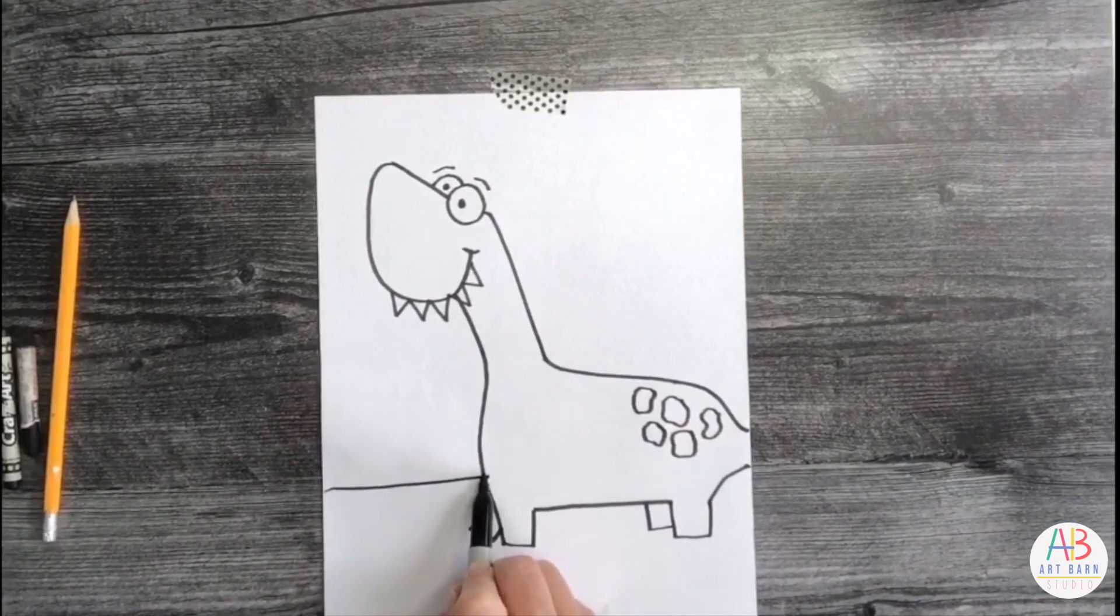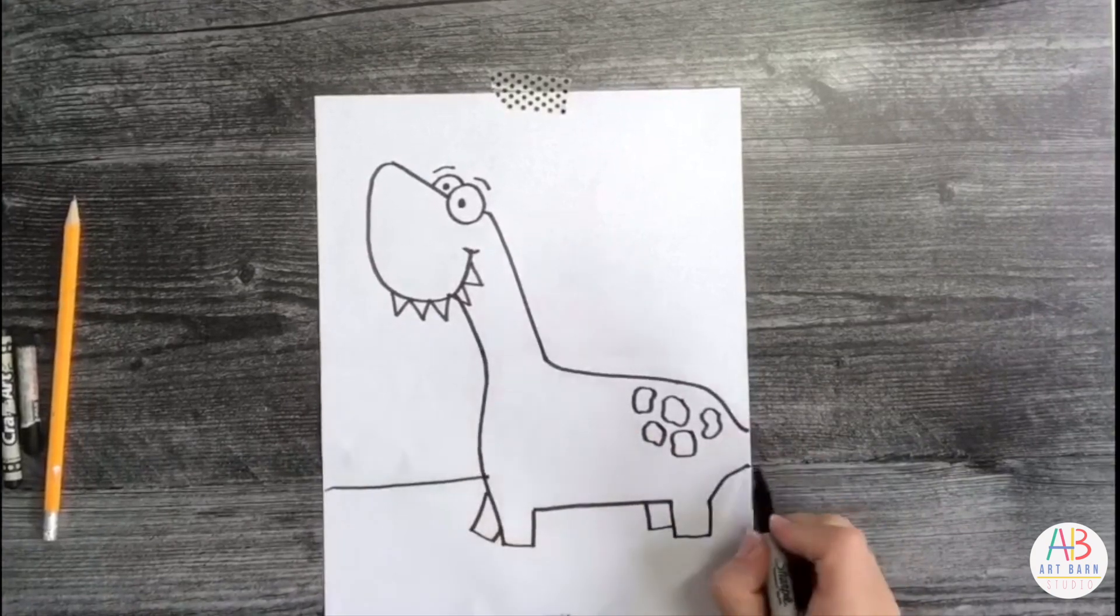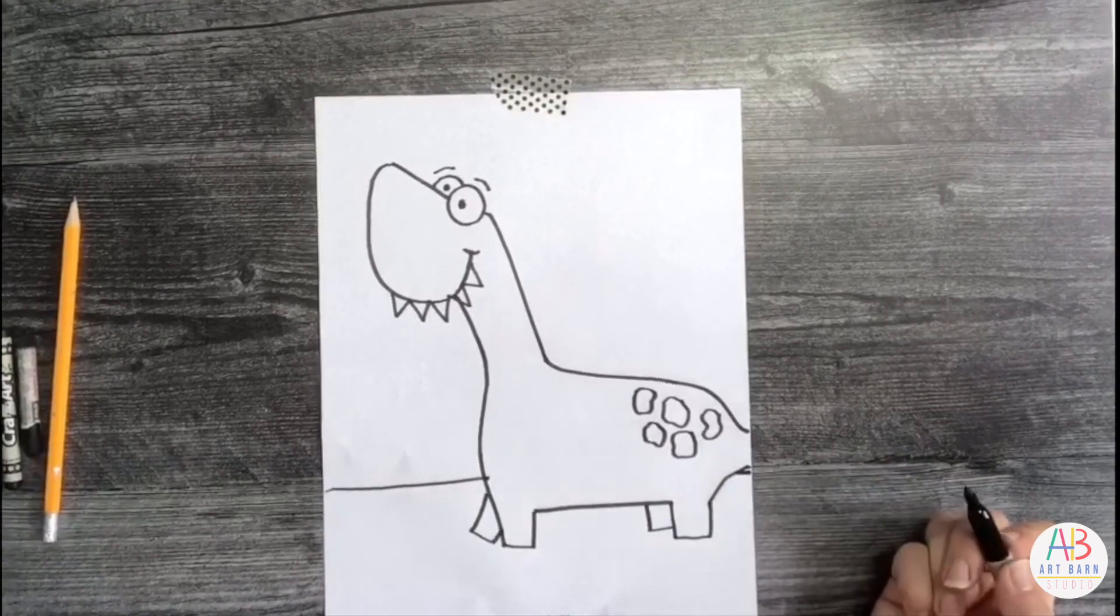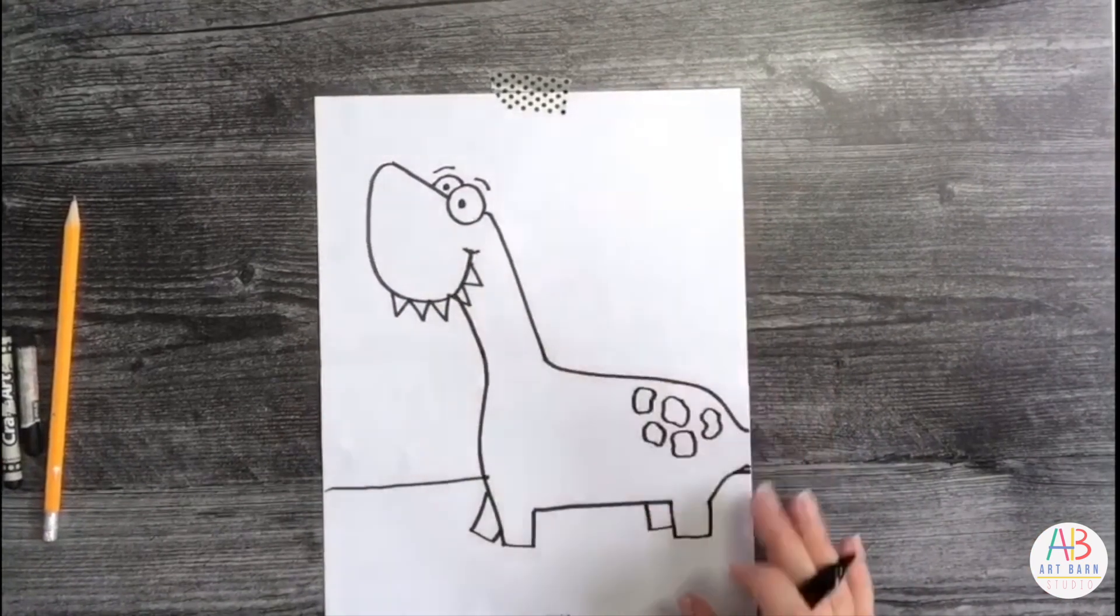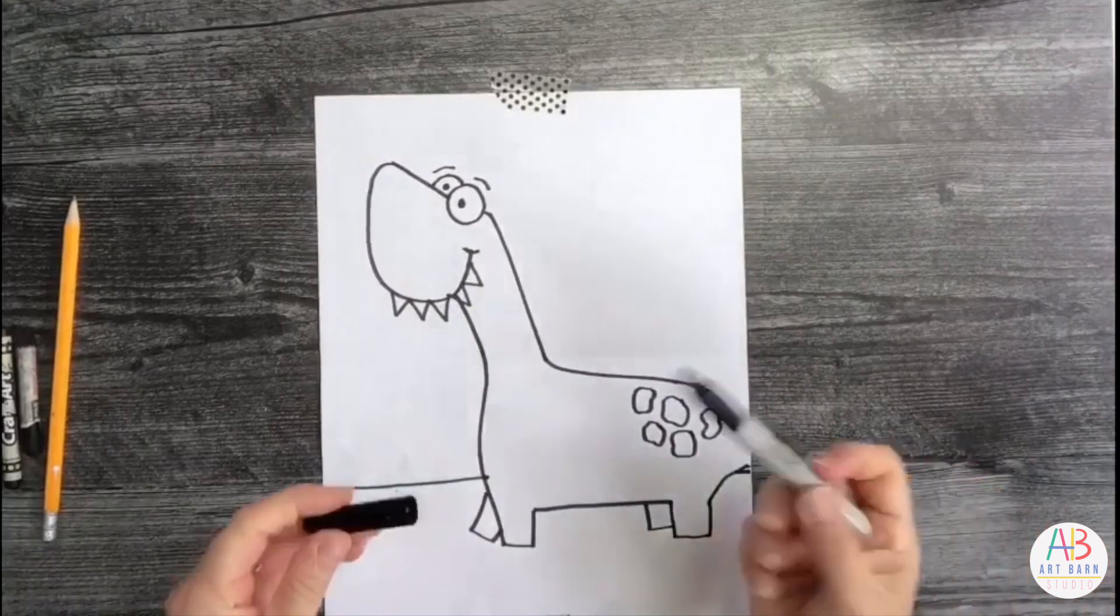Depending on how much room you have left, you can kind of see the line under there, so it looks like our dinosaur is walking. Maybe you want to add a few more details like a sun or some clouds or some trees. I'm going to stop there with my drawing.